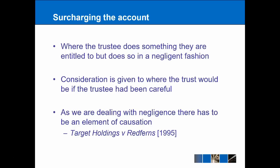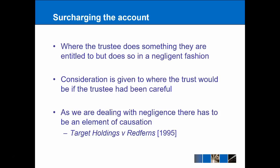Moving on to the second type of breach, where the trustee does something they are allowed to do but does it in a negligent fashion. In this situation, consideration has to be given to where the trust would be if the trustee had actually exercised due diligence and not been negligent. As we're dealing with negligence, those who've studied tort law will know there is an element of causation. In the case of Target Holdings v Redferns from 1995, the trustees hadn't actually caused the loss to the fund and so they were not liable. It's important that we consider causation.